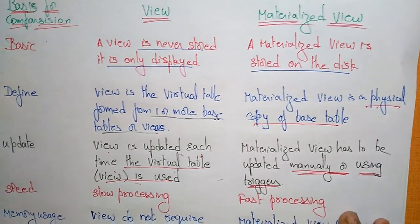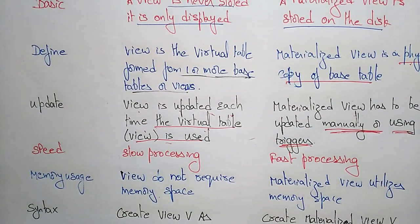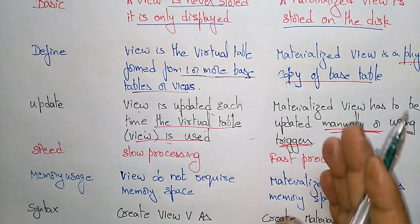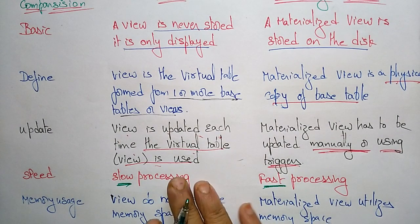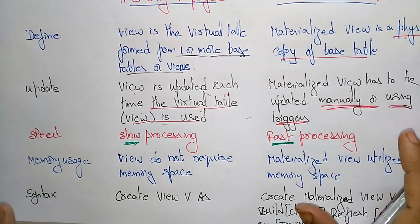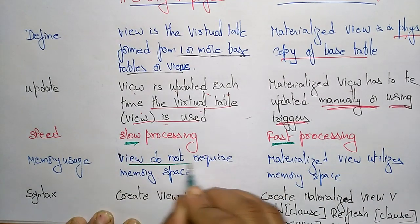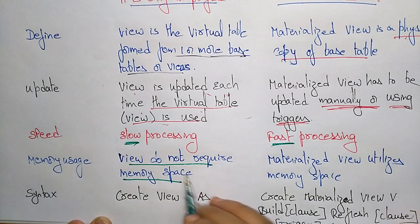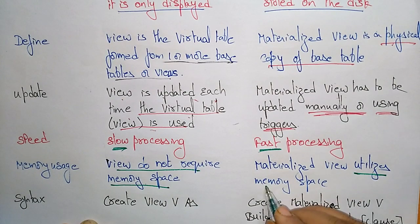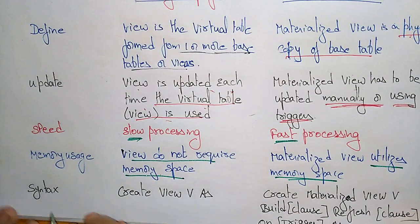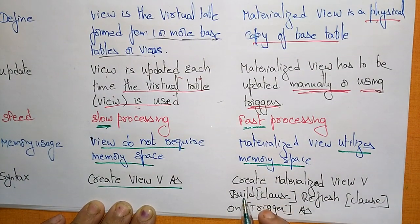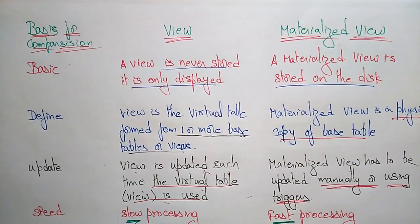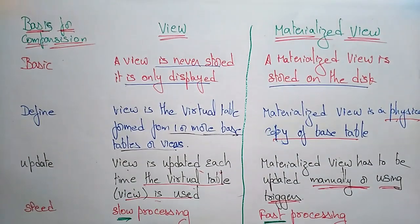Materialized views can be updated using triggers. In terms of speed, views are slow processing queries, whereas materialized views are fast processing queries. Regarding memory usage: views do not require any memory space since they are virtual tables, whereas materialized views utilize memory space. The syntax comparison: view uses CREATE VIEW v AS expression, whereas materialized view uses CREATE MATERIALIZED VIEW v [build clause] [refresh clause] ON [trigger] AS expression.